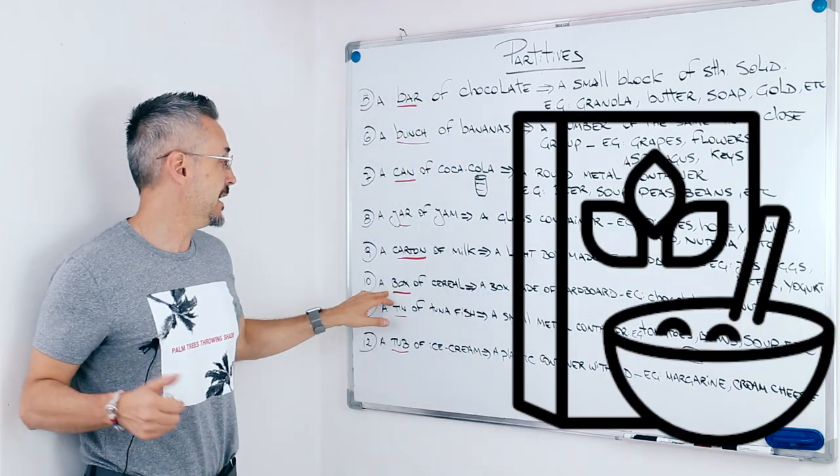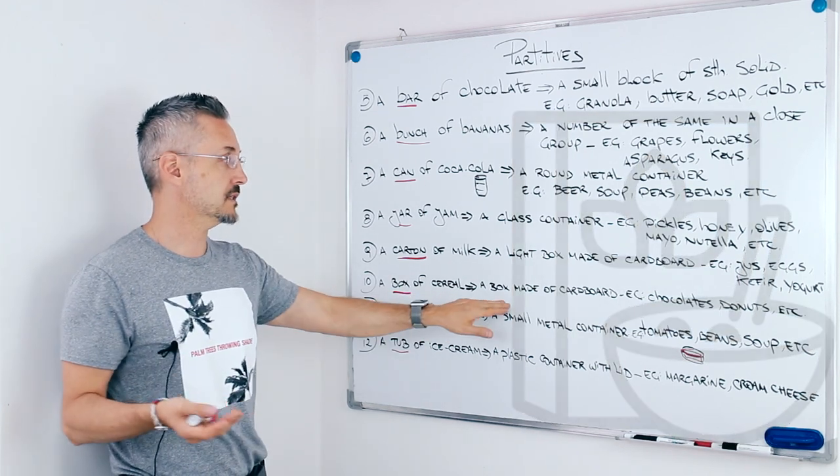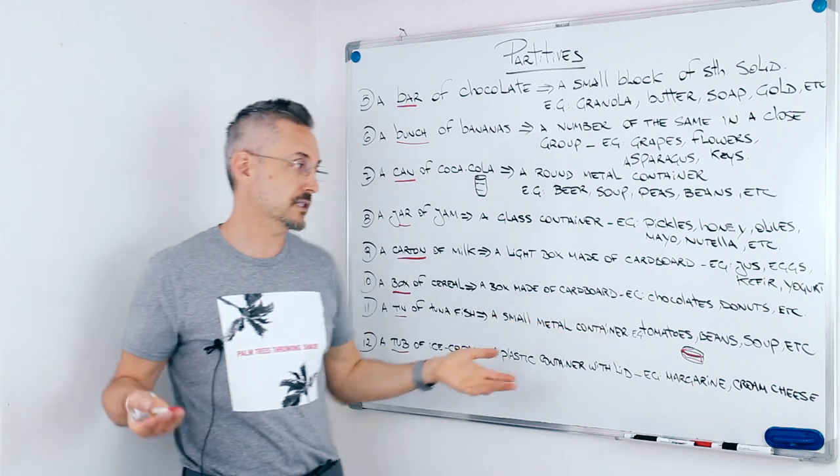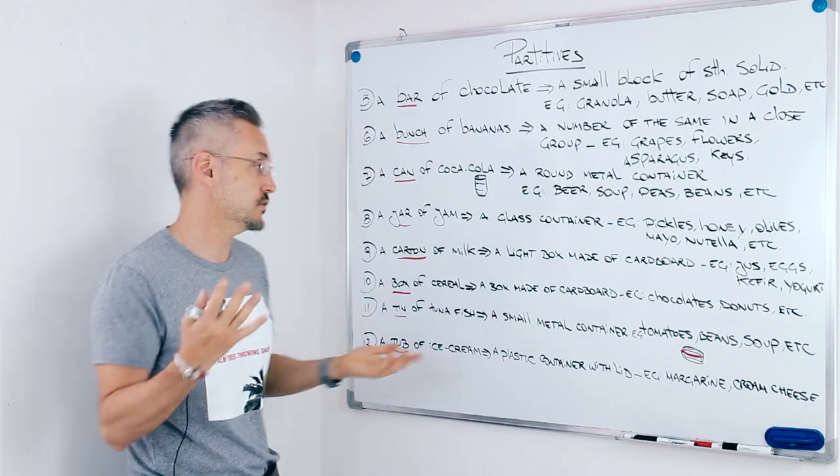Then we had a box of cereal. And this is a box, a normal box made of cardboard. For example, a box of chocolates, a box of donuts, etc.